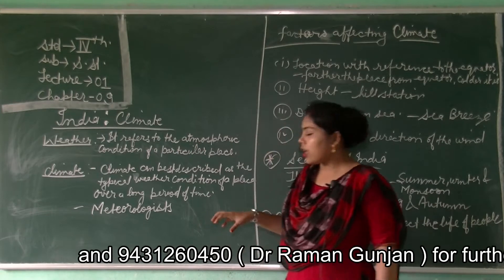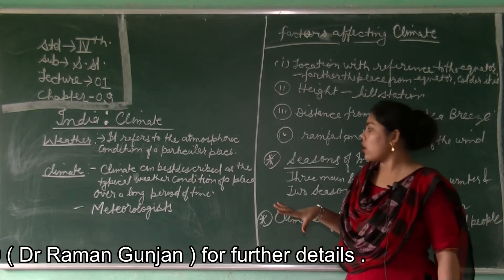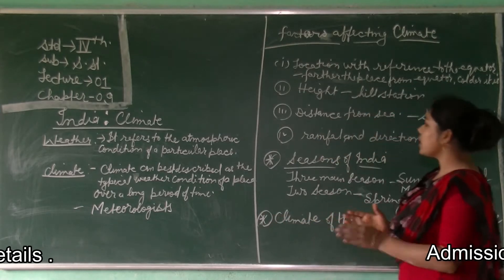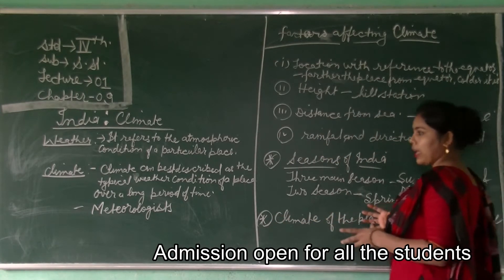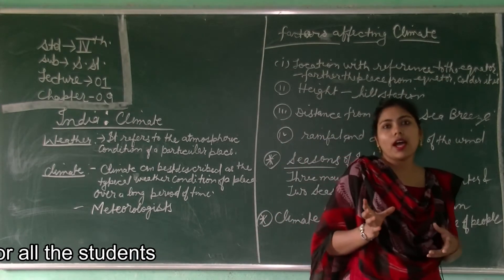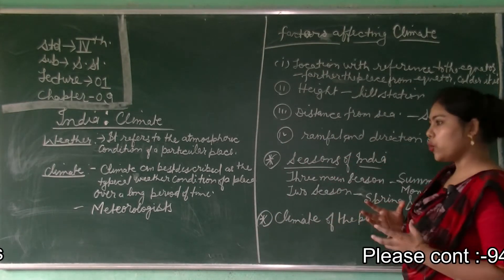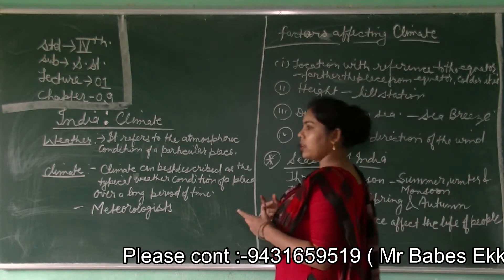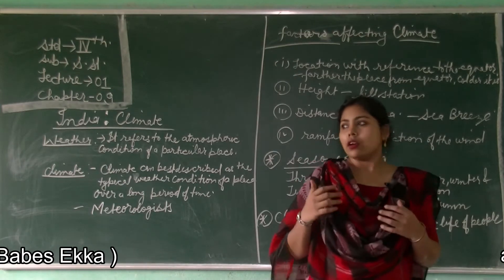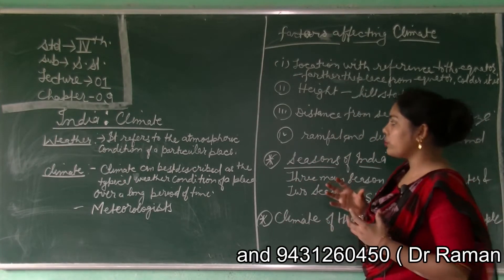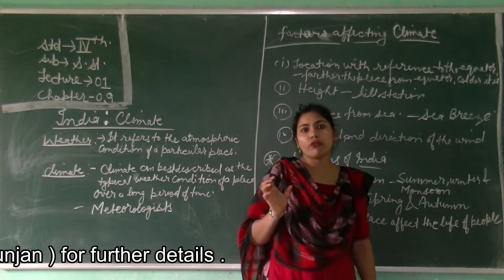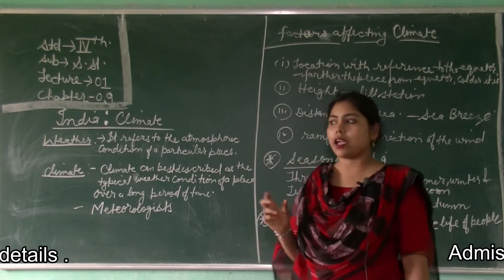The person who studies the weather and forecasts it is called a meteorologist. Now let's see some examples of climate. If I say that Kerala has a hot and humid climate and Kashmir is cold, we are referring to the climate of these places.